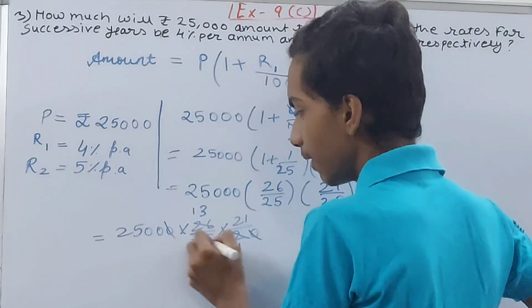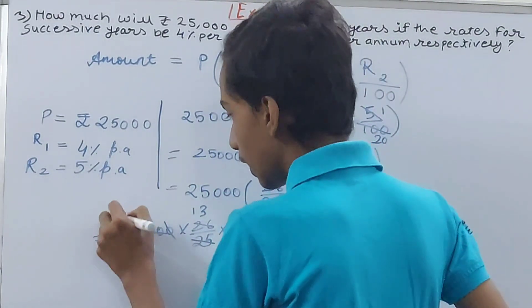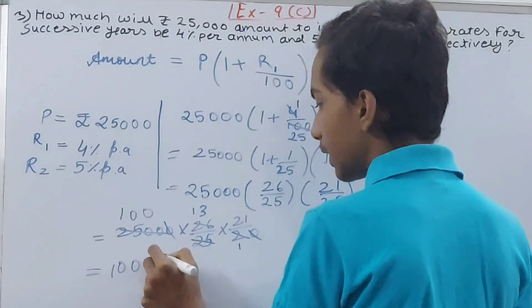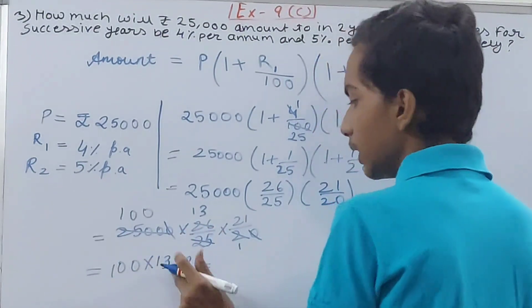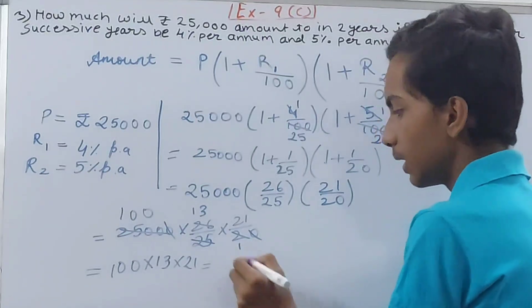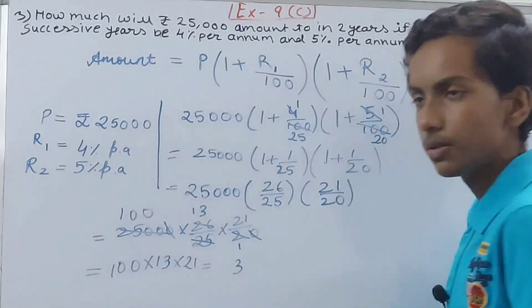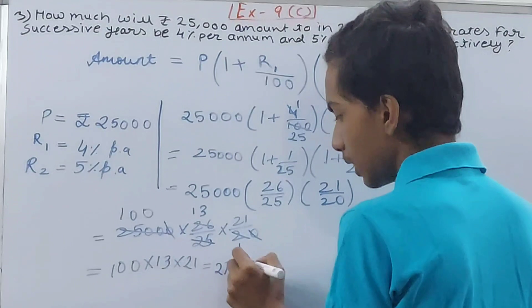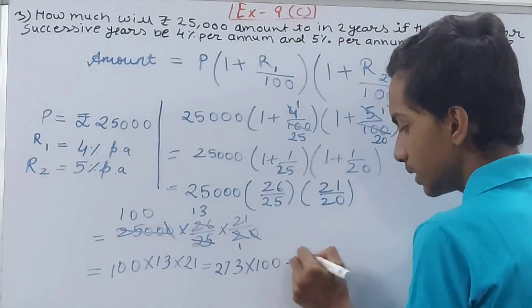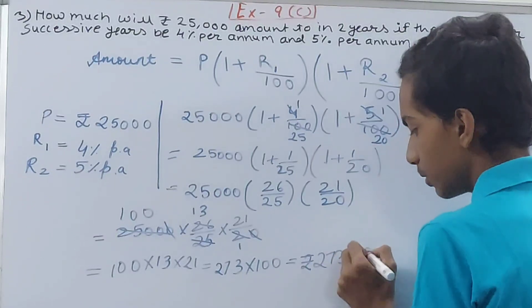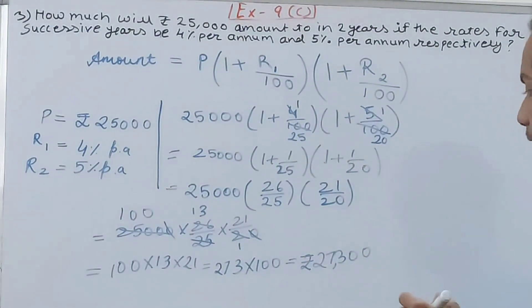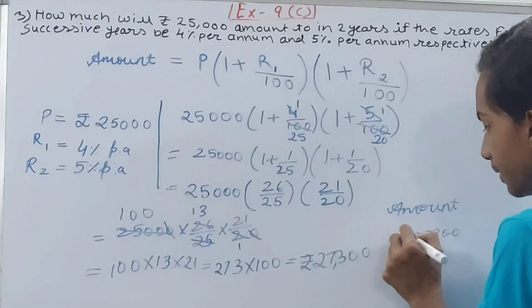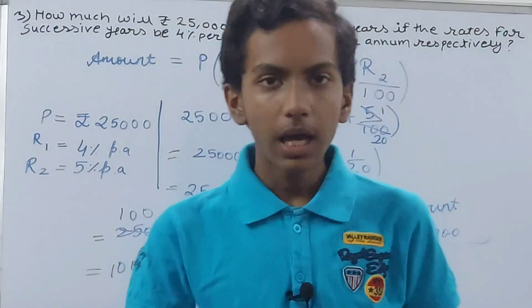× 21. So 13 × 1 is 13. 3 written, 1 carried over. 13 × 2 is 26, and 1 is 27. So I'll have 273 × 100. So you have Rs. 27,300. That is 27,300, and this is your amount. Rs. 27,300, that is your final answer. And friends, this is